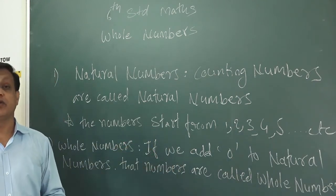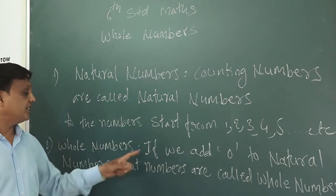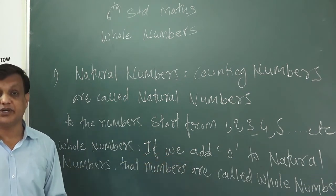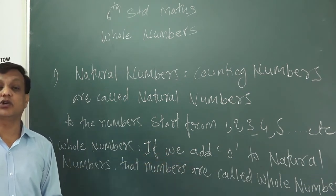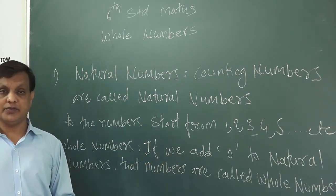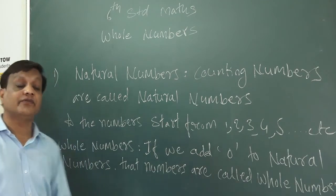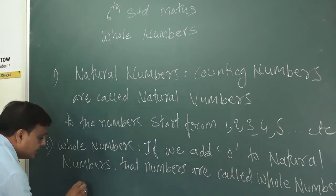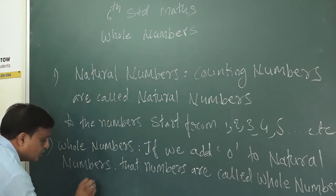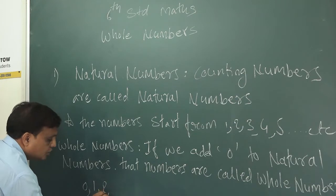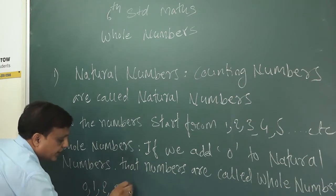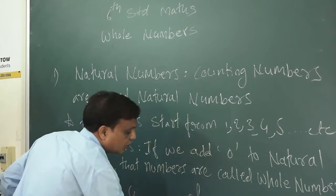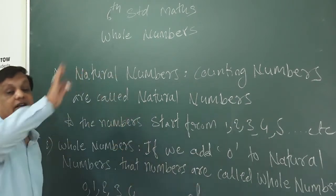So the whole number definition: if you add 0 to the natural numbers, those numbers are called whole numbers. Whole numbers start from 0, 1, 2, 3, 4, and so on to infinity. They are infinite numbers. This is natural number and whole number.